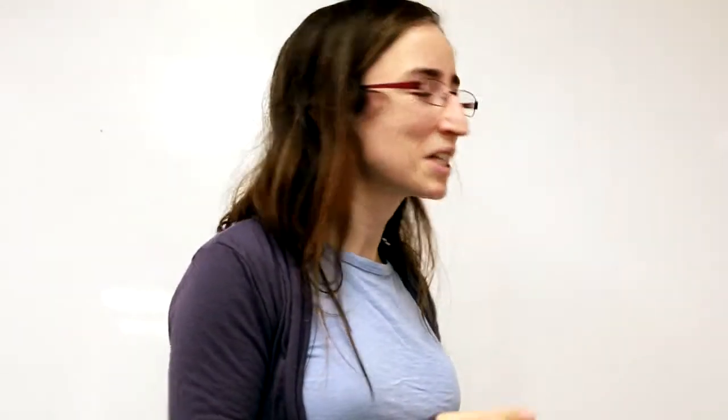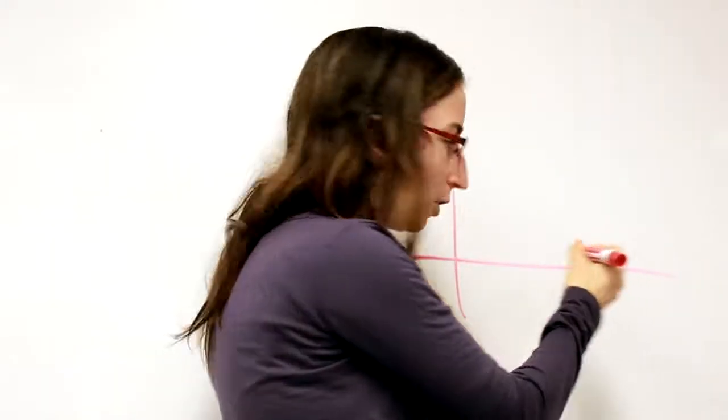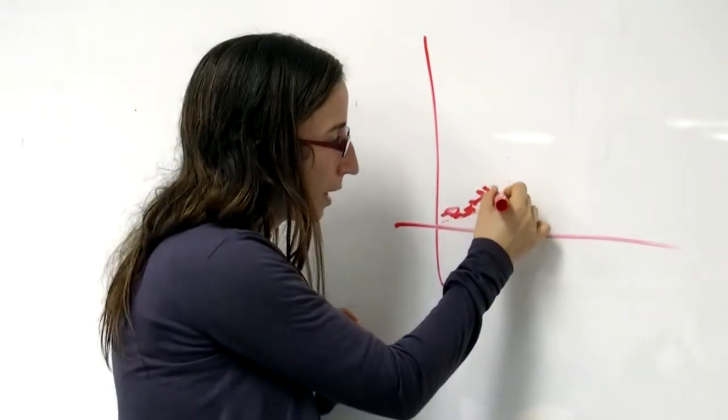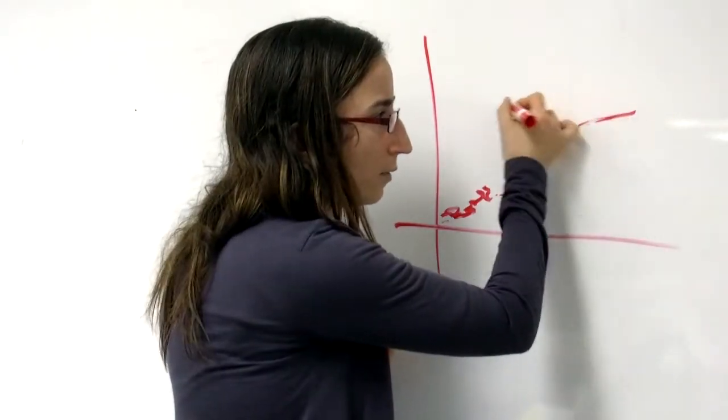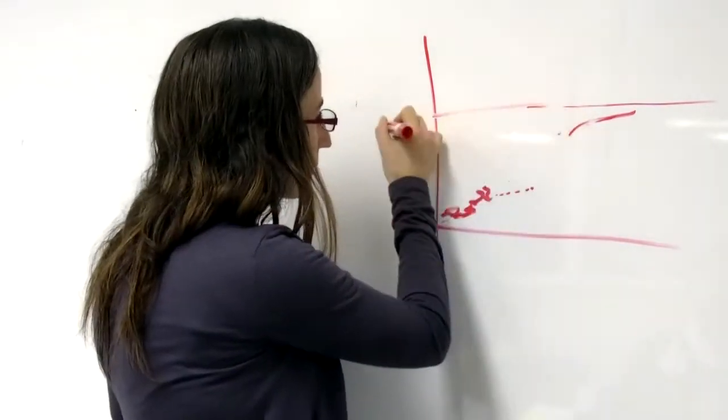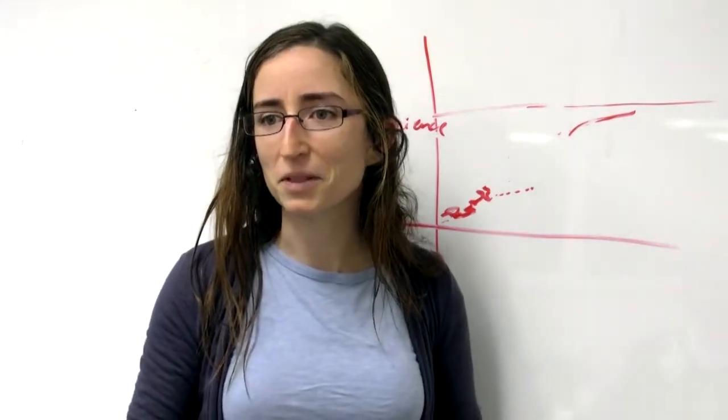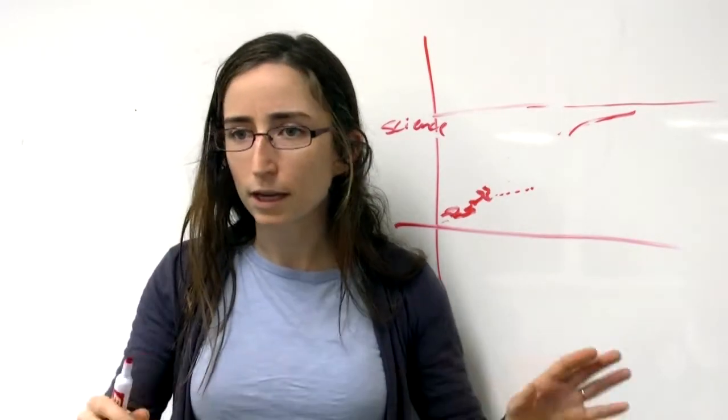So the Center for Applied Rationality does rationality training. Here's the idea. Here's a graph of how competent people are over time. We start out like primordial ooze and we're not very competent at all. Then evolution happens. Eventually you get to a level where people become able to invent science. And it's because we're at the level where we're able to invent science and we have things like video cameras and so on that we're actually having this sort of conversation today, able to reflect.